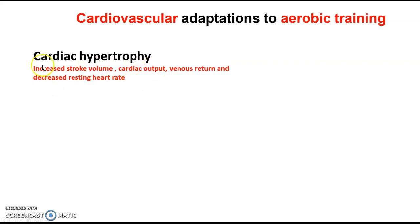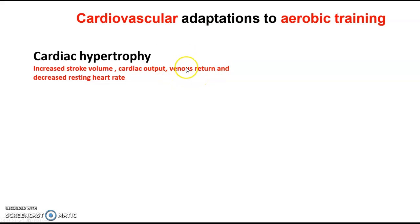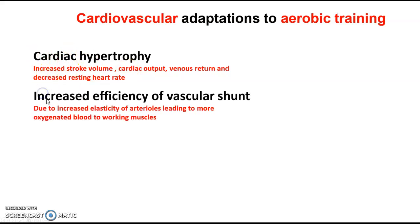We're getting a bigger heart size — cardiac hypertrophy — which means we can pump out more blood per beat (stroke volume), eject more blood per minute (cardiac output), and get more blood back to the heart after exercising. So that's a key thing to make sure we've got.